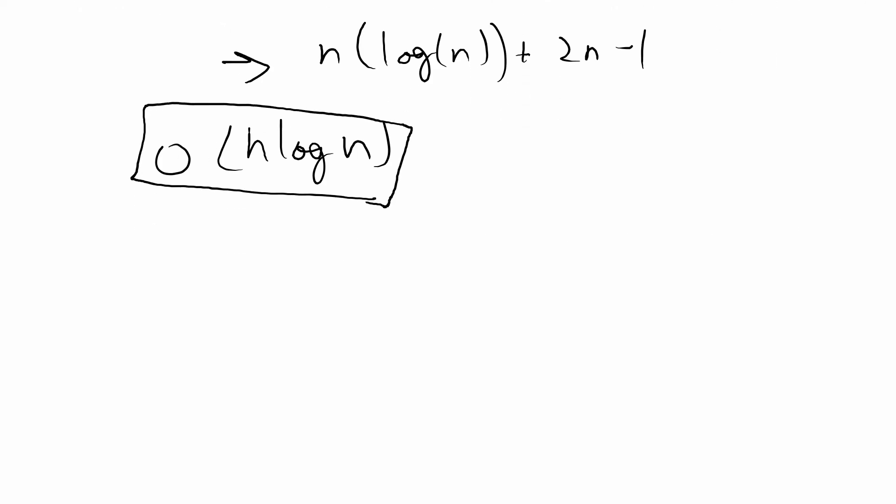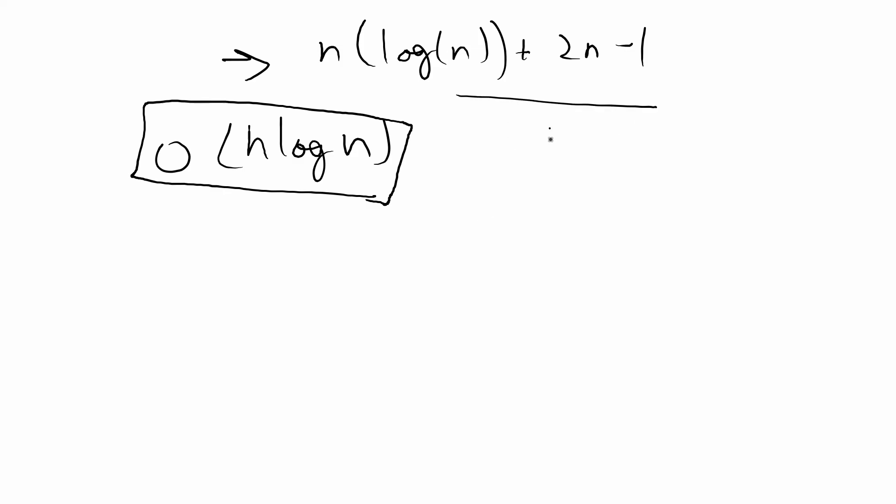And the cost per operation you just divide that by n and you would get O(log n) per call to the add method.